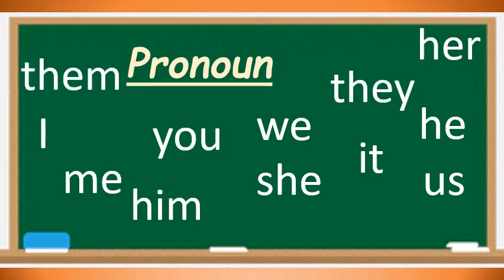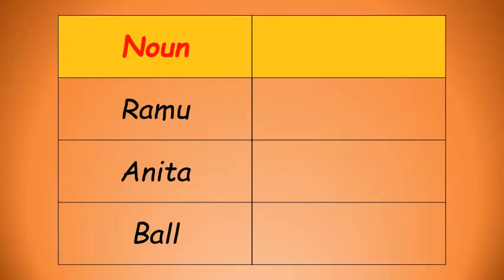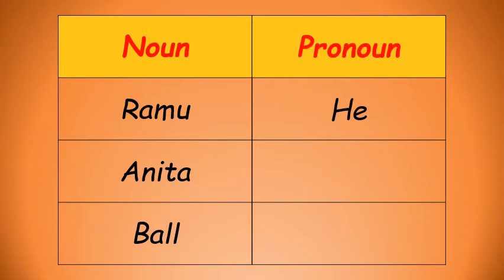Now let's go back to our table. Look at the nouns Ramu, Anita, and Ball. Which other word can replace Ramu? As Ramu is a boy, we can say 'he'. Replacing a noun with another word is called a pronoun. A pronoun is a word that takes the place of a noun. So here, 'he' will take the place of Ramu. The pronoun for Anita will be 'she', and the pronoun for Ball is 'it'.